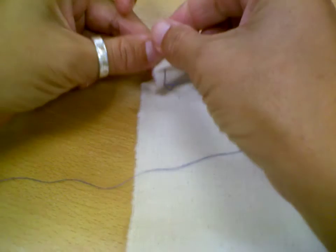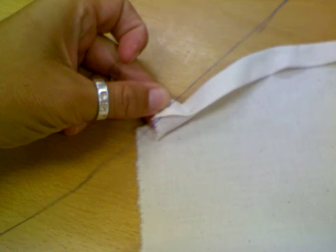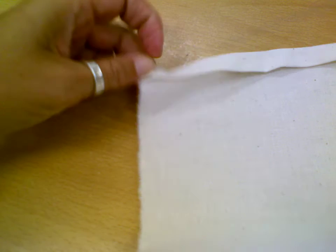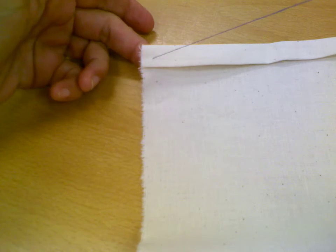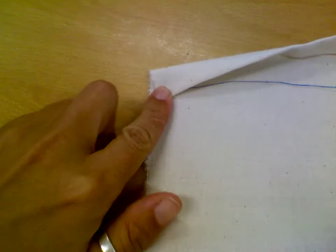I'm just going to pull my thread through. Can you see that okay? Just like that. Now you can't see on either side where that knot is.